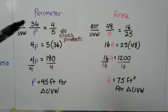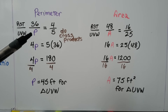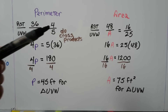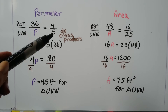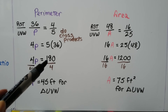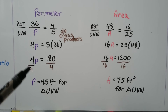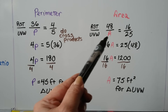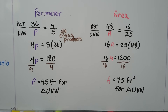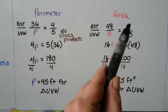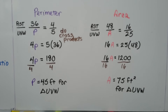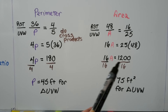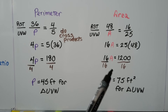The perimeter of RST is 36. To find the perimeter of UVW, we set up the ratio 4/5 equals 36 over P, then cross multiply: 4P equals 5 times 36, which is 180. Dividing both sides by 4, the perimeter of triangle UVW is 45 feet. For area, the area of RST is 48, and the area ratio is 16/25. Cross multiplying: 16A equals 25 times 48, which is 1200. Dividing by 16, the area of triangle UVW is 75 square feet.